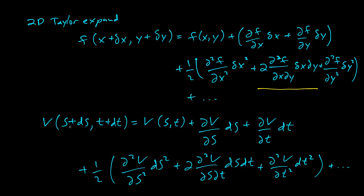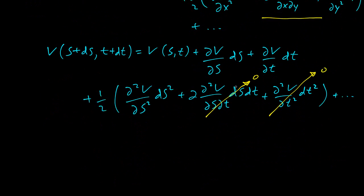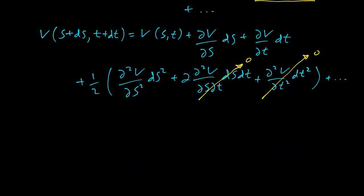All right, so now already looking at this equation, we can see that we have DTs here, and we have things that are slower, they're smaller than DT. So this will go to zero. And DT squared, this will go to zero. DS squared needs a bit more work. And so we're doing the same thing as before. V of S plus DS, T plus DT minus V of ST is kind of like DV. And so we have a formula for DV.